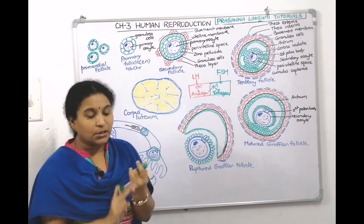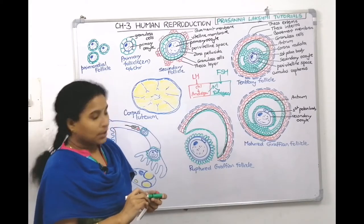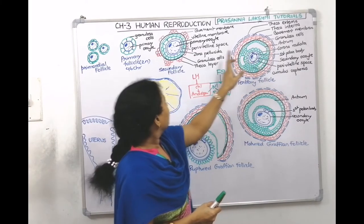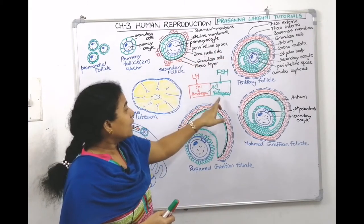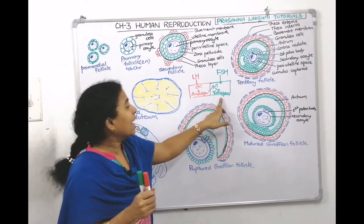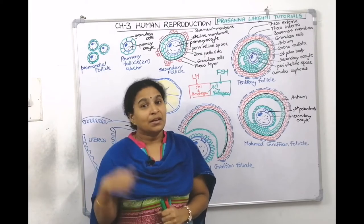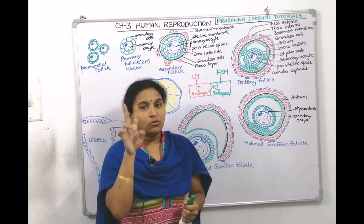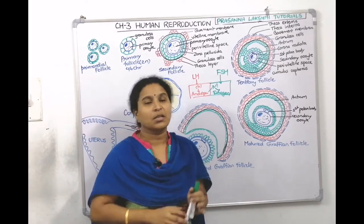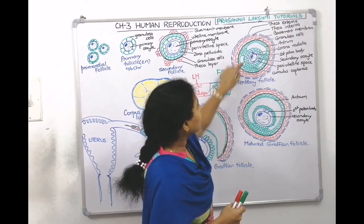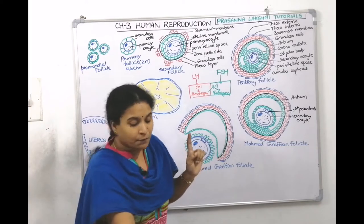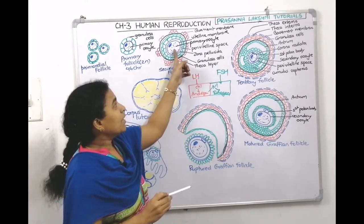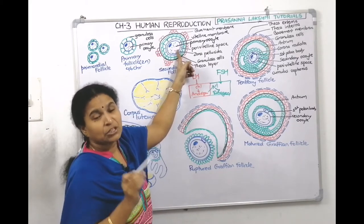Estrogen helps in the development of the follicles along with FSH. Under the influence of estrogen and FSH, the primary oocyte completes meiosis I — it resumes from prophase I through metaphase I, anaphase I, and telophase I. This division is unequal, producing a bigger cell called the secondary oocyte and a smaller cell called the first polar body.